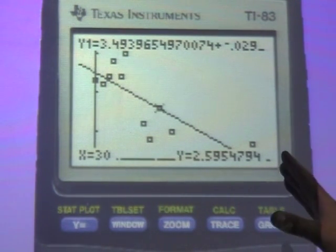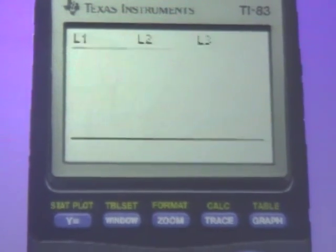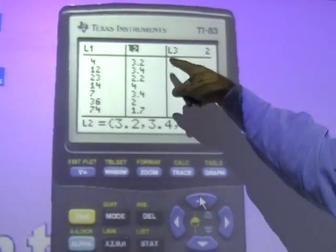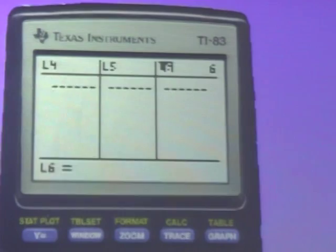In order to make a residuals plot, here's what we have to do. We've got to go back into our stat, edit, and we have to make a list for residuals. How do we do that? Well, we go up, over to the right, until you get to the blank list that has no name.